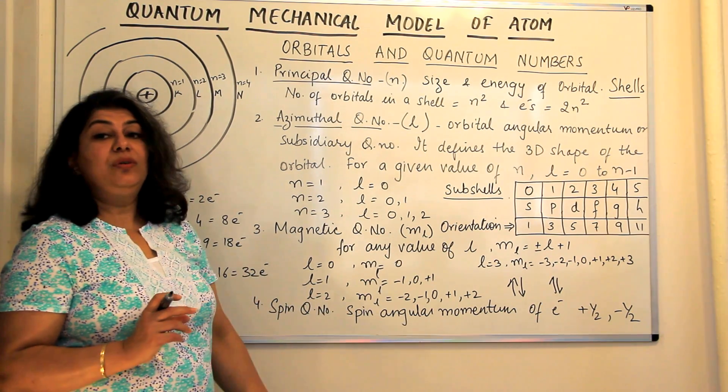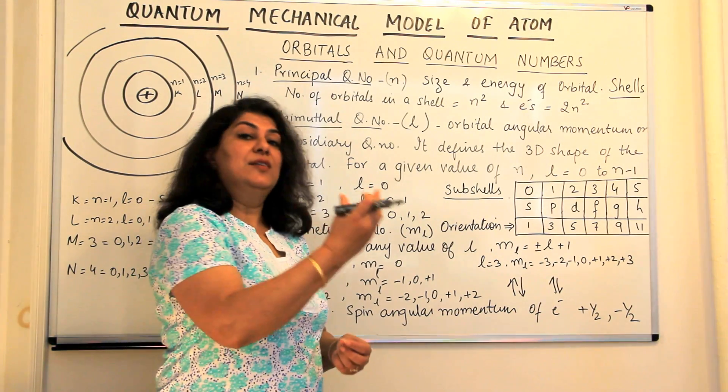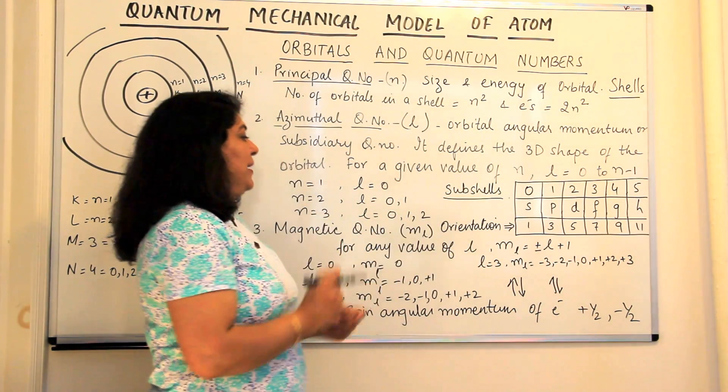If l is 2, then the values of m would be minus 2, minus 1, 0, plus 1, plus 2.